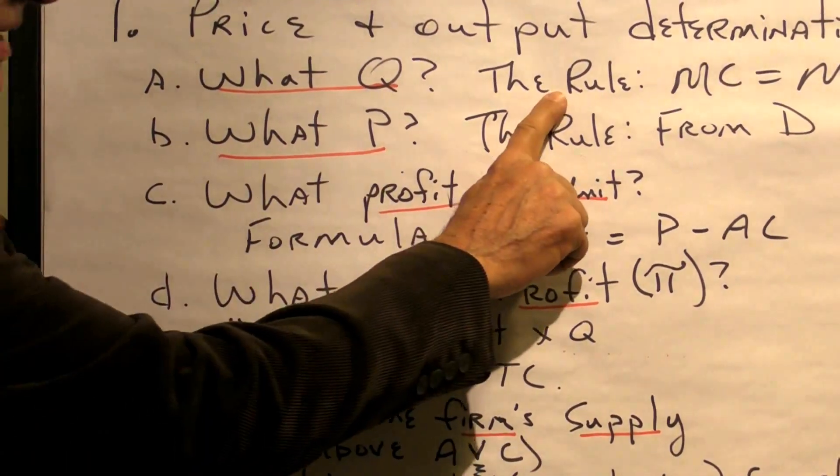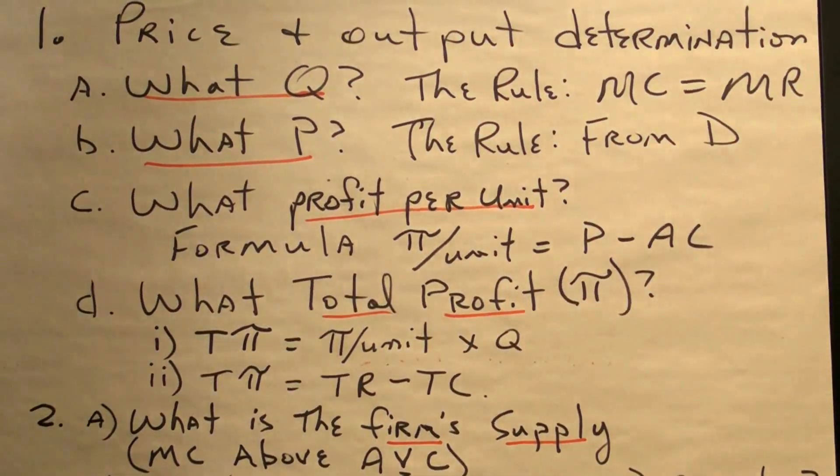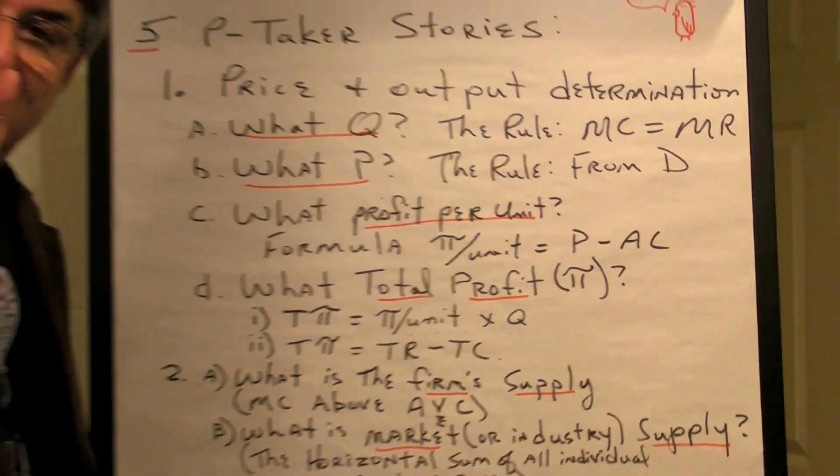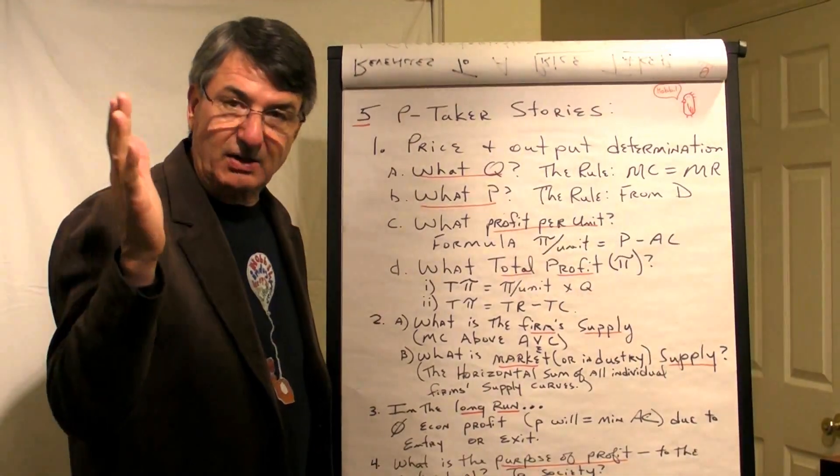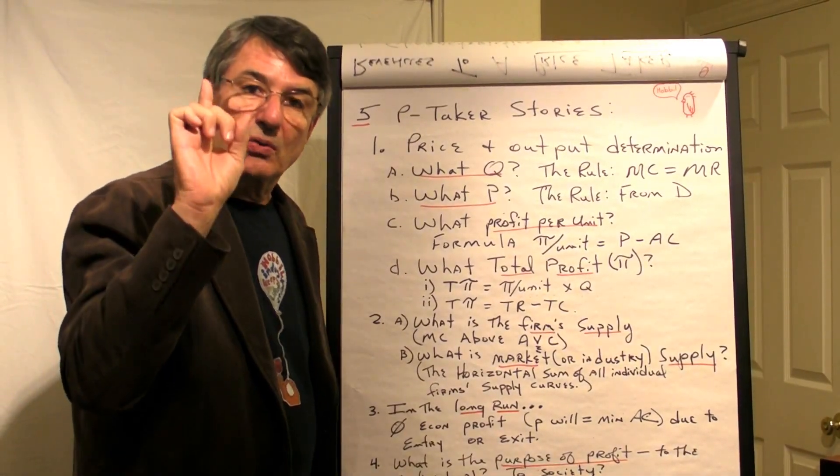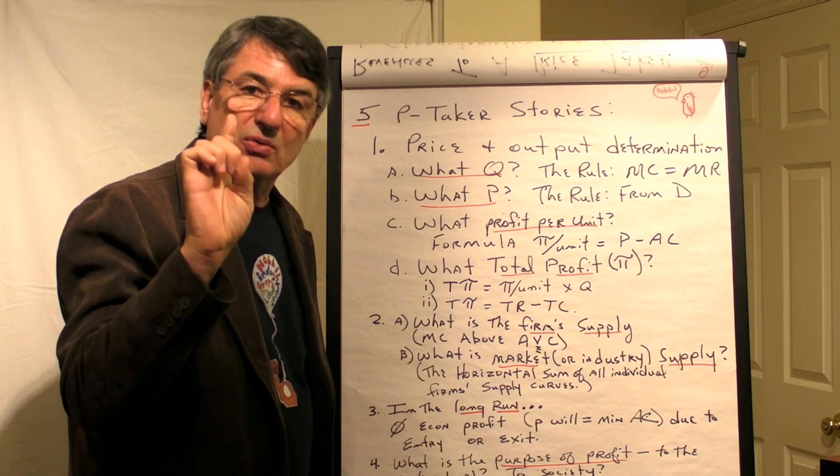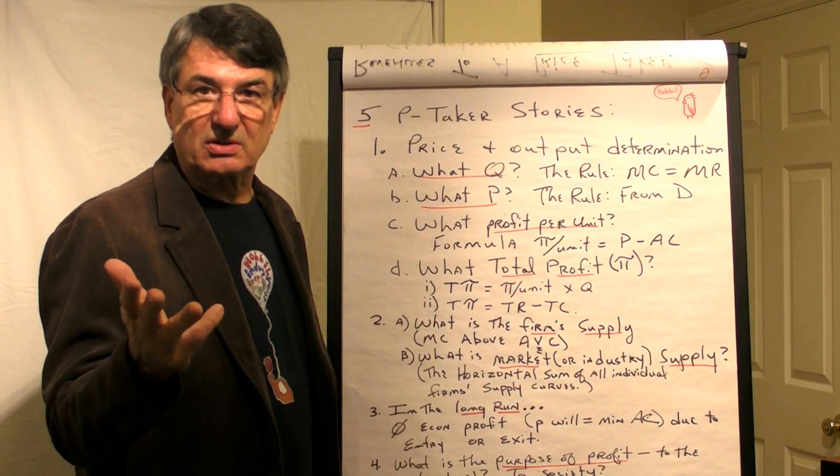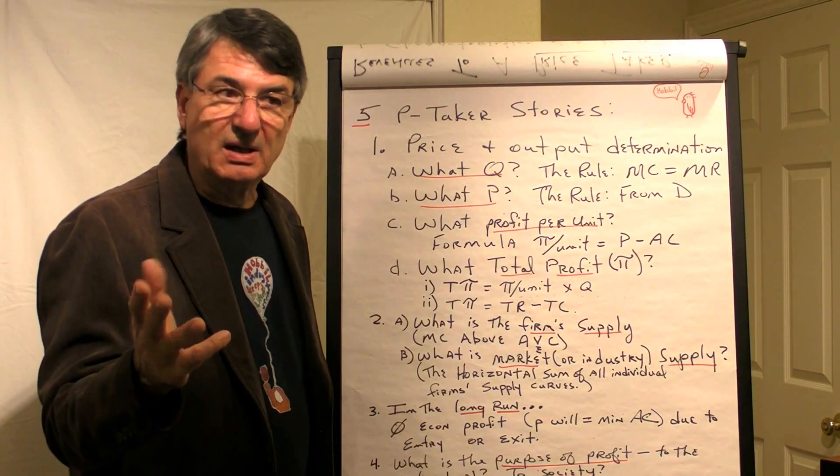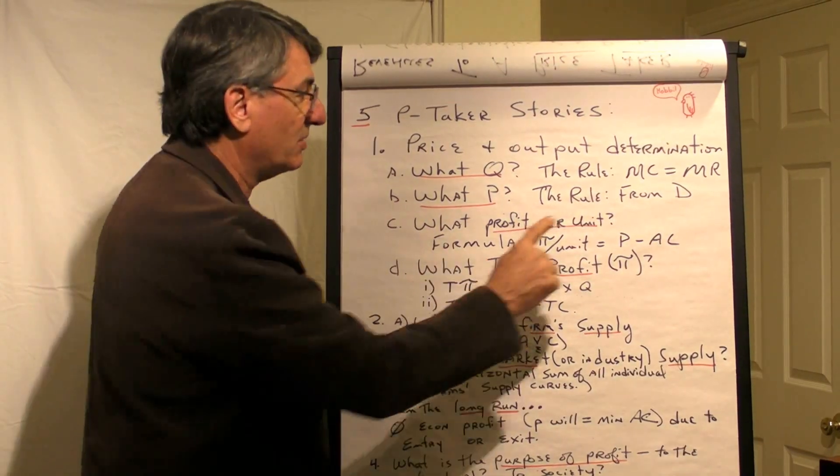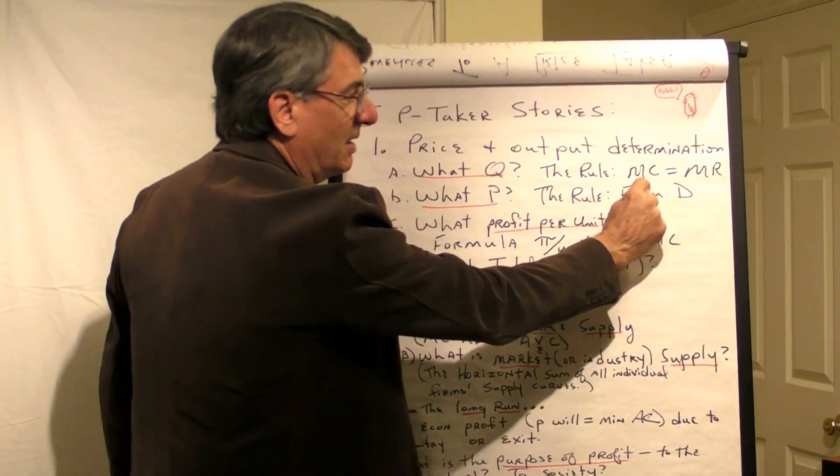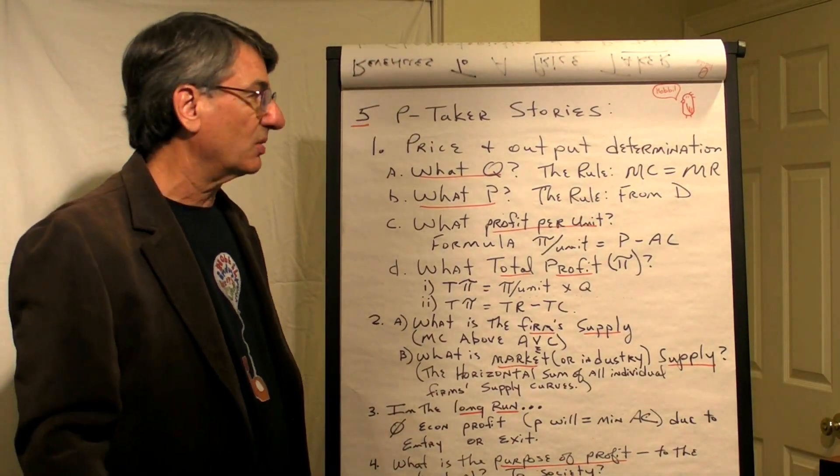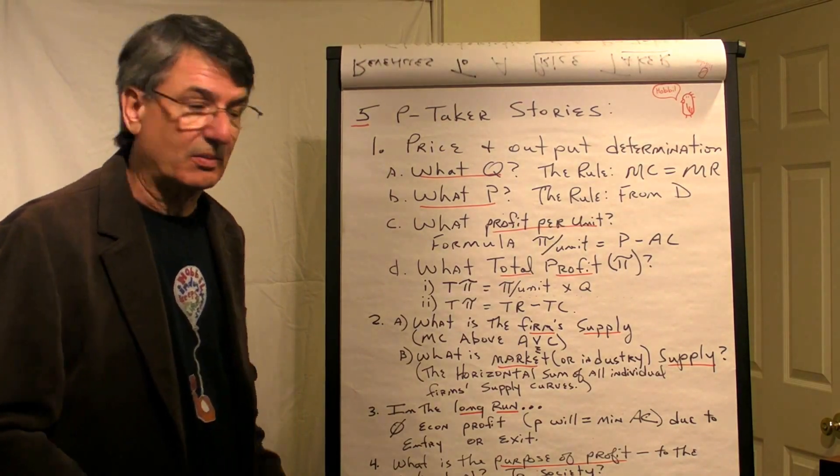When we talk about what quantity, there's a rule. You produce the quantity where marginal revenue equals marginal cost. That's a translation of the greater rule which says, when you make a decision, you do all activities for which the marginal benefit exceeds the marginal cost, and none for which the marginal cost exceeds the marginal benefit. So you have maximized your profit when you push the output to where marginal cost equals marginal revenue.